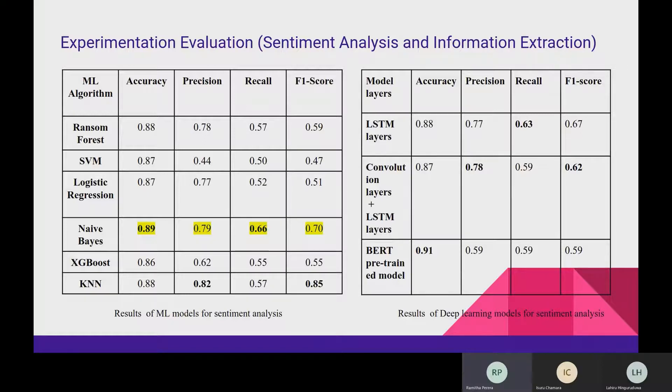Also, being close to the highest value in precision and recall, we can choose the Naive Bayes model for implementing our system because it has the highest accuracy and recall.